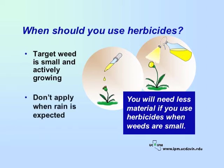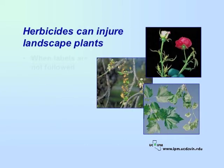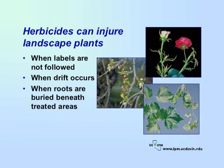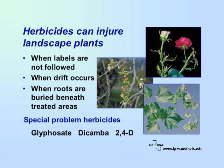Do not apply post-emergent herbicides if rain is expected. Injury to many ornamental or garden plants may result when label instructions are not followed, but it also occurs when drift or runoff takes the herbicide to neighboring plants. Drift damage can occur quite a distance away from the spray zone. Trees with roots growing under lawns may be affected by some herbicides applied to the lawn. Three herbicides that have been associated with plant injury are glyphosate, dicamba, and 2,4-D.